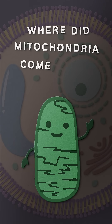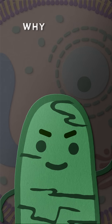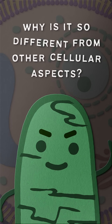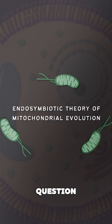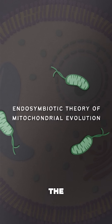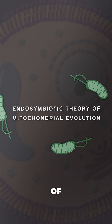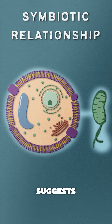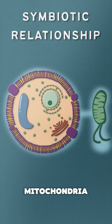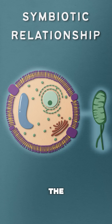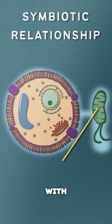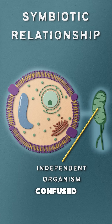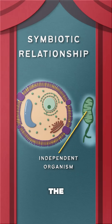Where did mitochondria come from, and why is it so different from other cellular aspects? This very question has led to the endosymbiotic theory of mitochondrial evolution, which suggests that mitochondria evolved from a symbiotic relationship with an independent organism. Confused? Here's the story.